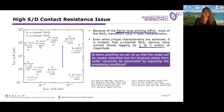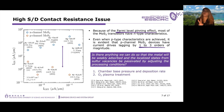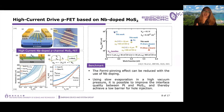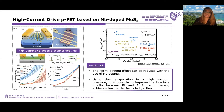This leads us to the question: is there anything we can do so that the metal will be weakly absorbed and the localized states from sulfur vacancies be passivated by adjusting the processing conditions? We look into two important aspects: one is the chamber-based pressure and deposition rate of the metal, and another is the O2 plasma treatment for passivating sulfur vacancies on the underlying MoS2 film before metal deposition. Our group has already demonstrated a high current drive P-channel device based on NB-doped MoS2 using slow evaporation of platinum at high vacuum, showing a reduction in Schottky barrier height and contact resistance due to improved interface quality between platinum and MoS2.